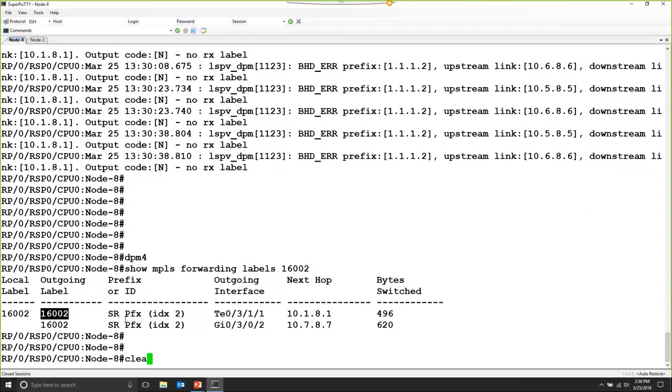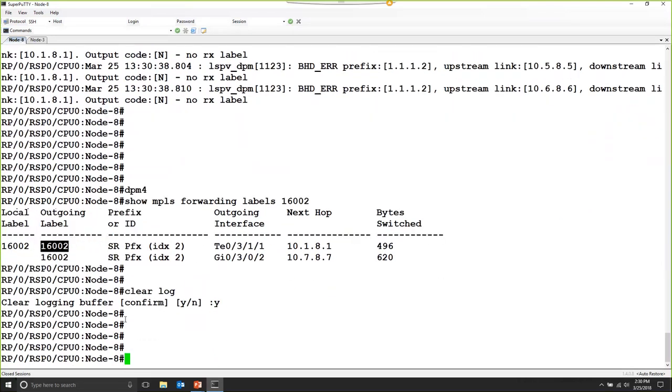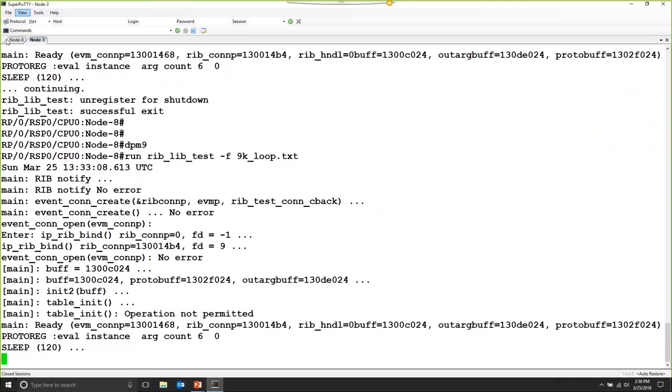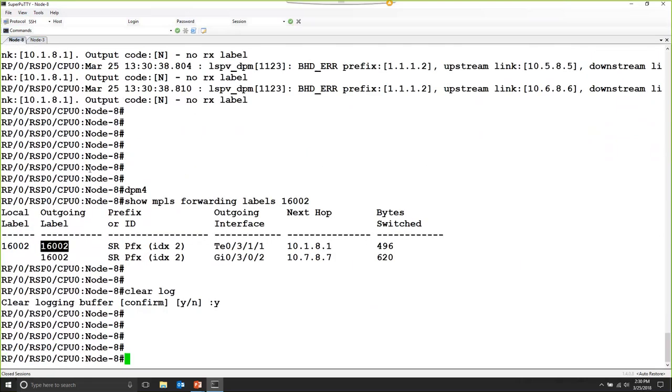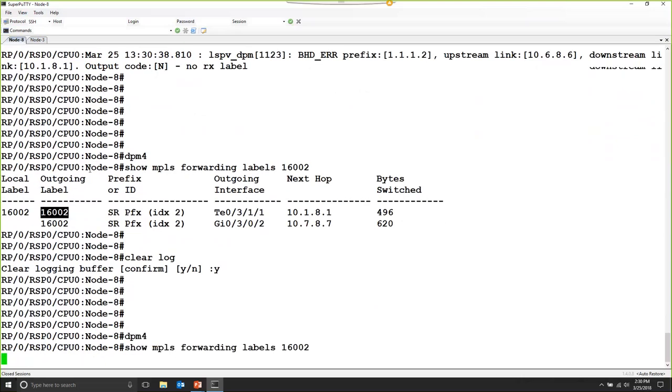I'm going to clear my log. Now I'm going to come back to the router and I'm going to use my utility to create the corruption. Corruption is in place. Let's have a look.